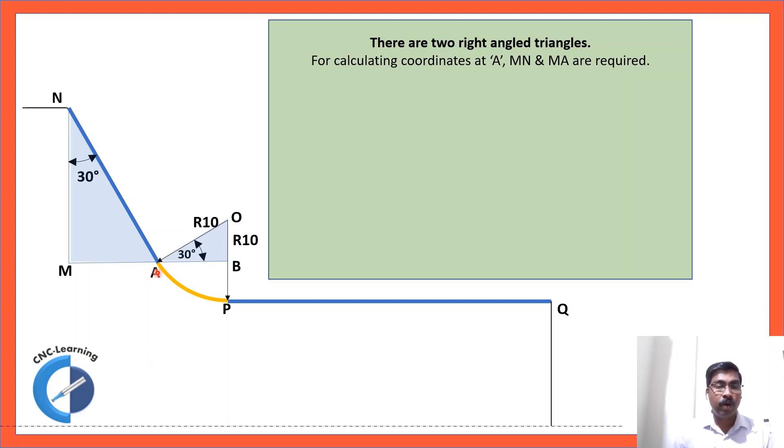Now, for calculating coordinates at A, you need to calculate MN and MA. So, we will see how to calculate. MN equals 25 minus BP. 25 is already given in the drawing. This point to this point, this vertical distance. That 25 minus this BP. So, BP is again, we do not know we need to calculate.